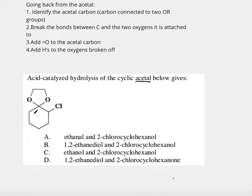Which carbon is connected to two OR groups? If we take a look at this carbon, it's connected to O with a carbon and O with a carbon. So this carbon is the acetal carbon. Now let's go ahead and follow my steps. Identify acetal carbon, done.